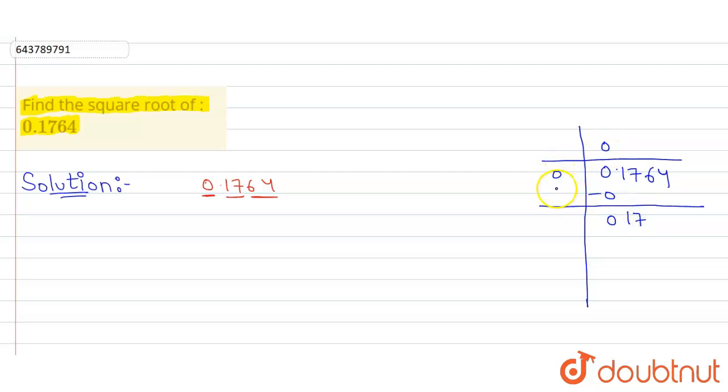And we add this, that is 0 plus 0, we'll get 0. Now we have to take a number less than 17. So 2 squared is 4, 3 squared is 9, 4 squared is 16.